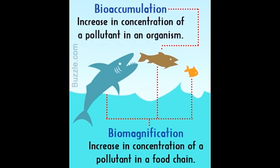Despite the fact that both revolve around the buildup of toxic substances in the bodies of organisms, bioaccumulation and biomagnification are two different concepts. Mercury bioaccumulation in fish is a cause of concern, as mercury is also known to bioaccumulate in humans, and fish is an important constituent of our diet.